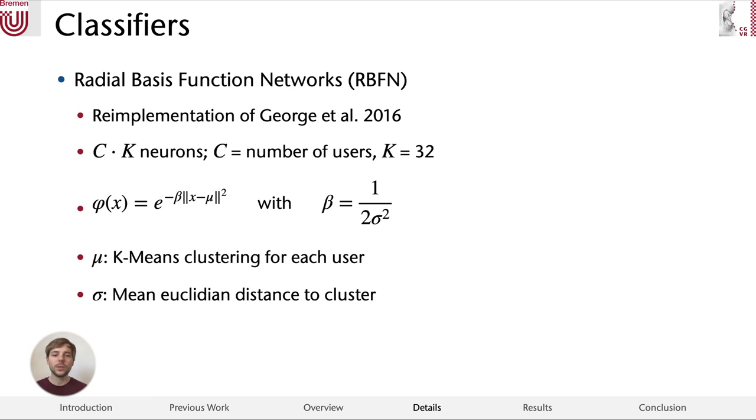As activation function φ, radial basis functions are used, as the name implies. For these, we have to estimate two parameters. μ is estimated by doing a K-means clustering, where we find 32 clusters for each user. From there, we can estimate σ by just taking the mean Euclidean distance to the cluster centers.